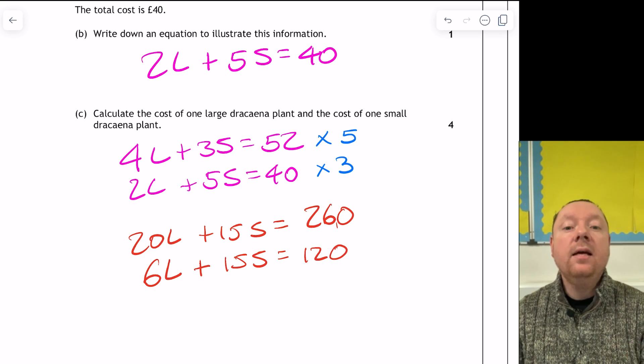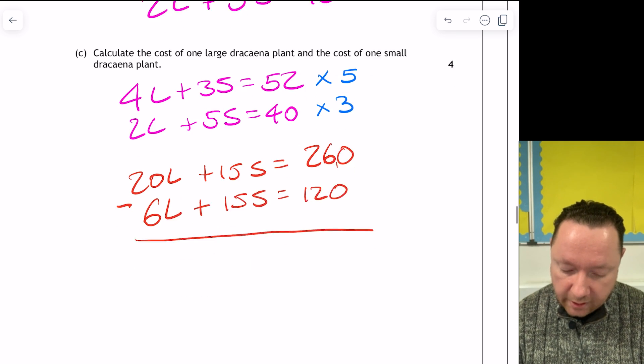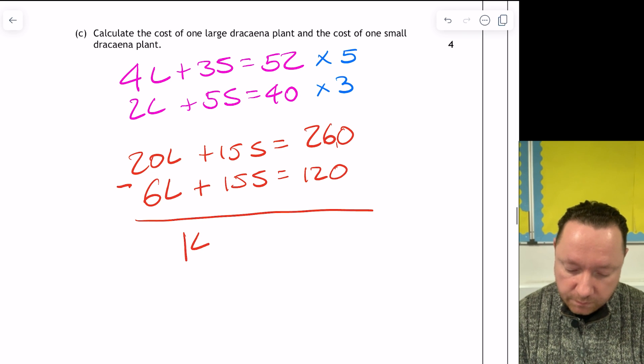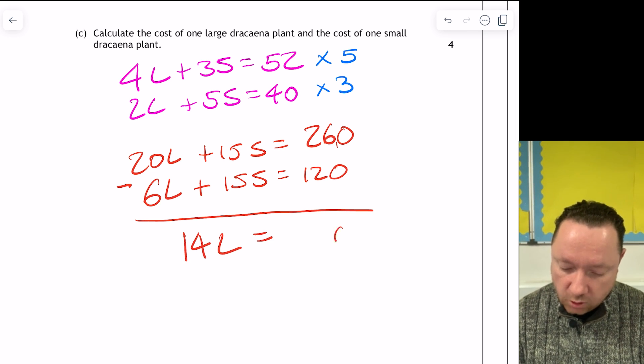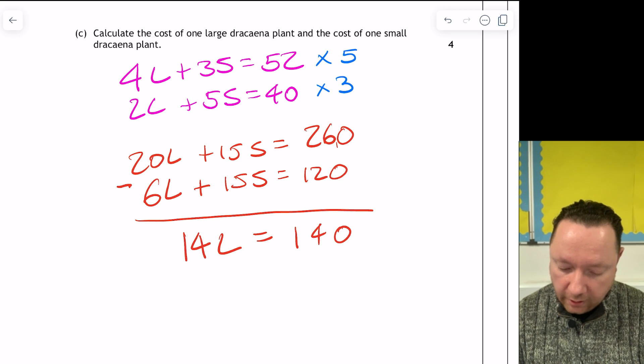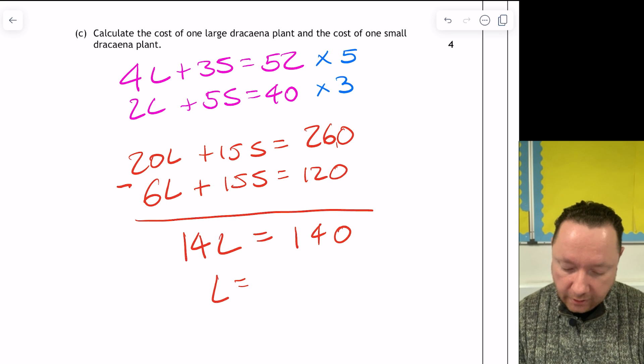So now they're the same, and if it's the same sign you take away, different sign you add. Same sign, take away. 20 minus 6 is 14L, the S's are gone, and then 260 minus 120 is 140. Well that's handy, 140 divided by 14 is 10. So L equals 10.